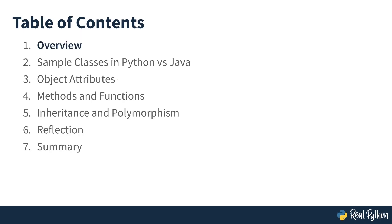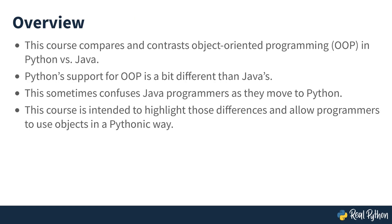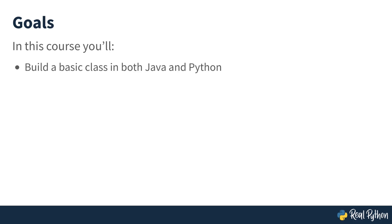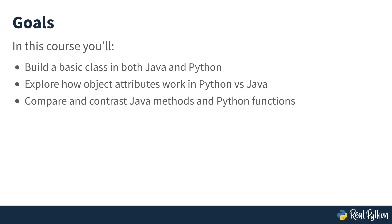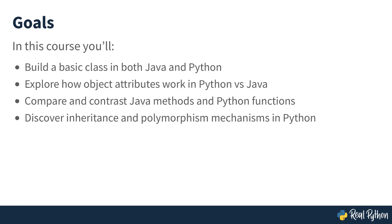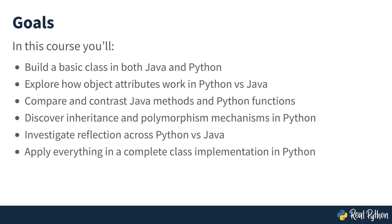In this course, we will compare class definitions in Java and Python, look at fields, methods, inheritance, and more. Python handles object-oriented programming in a different way than Java does. We'll be exploring those differences as we build a functional class in Python. You will build and compare a simple class in both Java and Python, explore object and class attributes in Python, learn about writing functions separate from any class or object, discover inheritance and polymorphism mechanisms in Python, learn how an object can discover information about itself in Python, and finally build a complete Python class applying all that you have learned.